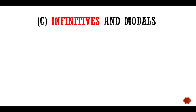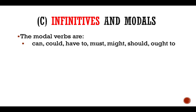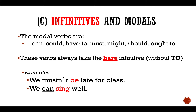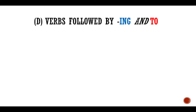Group C: infinitives and modals. The modal verbs — these are just some — are: can, could, have to, must, might, should, ought to. These verbs always take the bare infinitive. Bare means without 'to.' For example: 'We mustn't be late for class.' 'We can sing well.' So no 'to.'